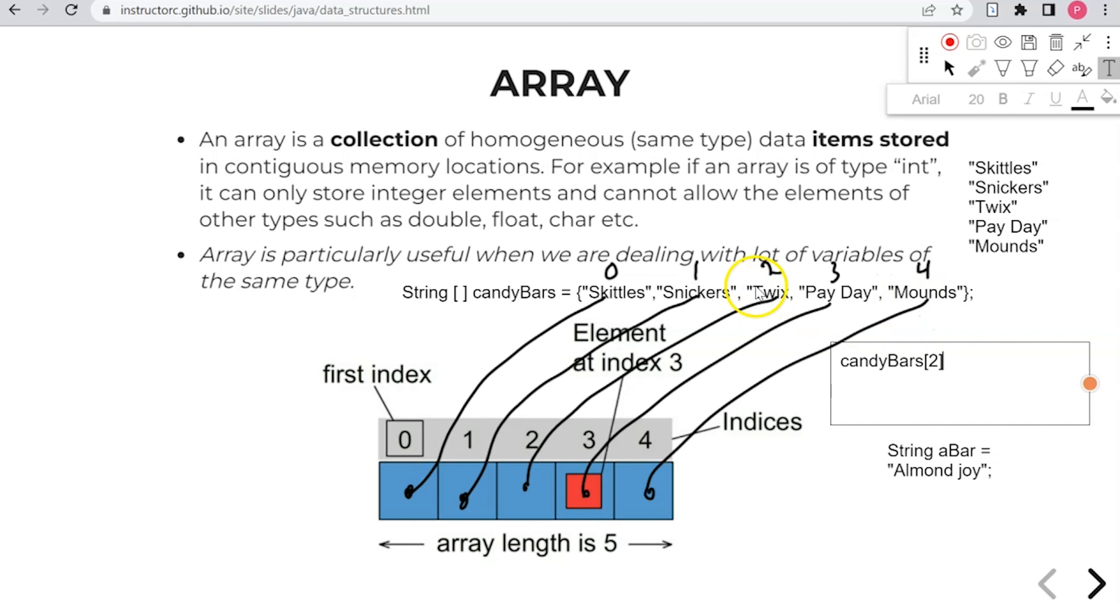So candy bars, and then give the opening bracket. And then we just say position two, not three, but we want to call out Twix because it's at index two. The element at index two is Twix. Twix with Snickers and Skittles is considered the elements. But the index of Twix is at index two or position two.